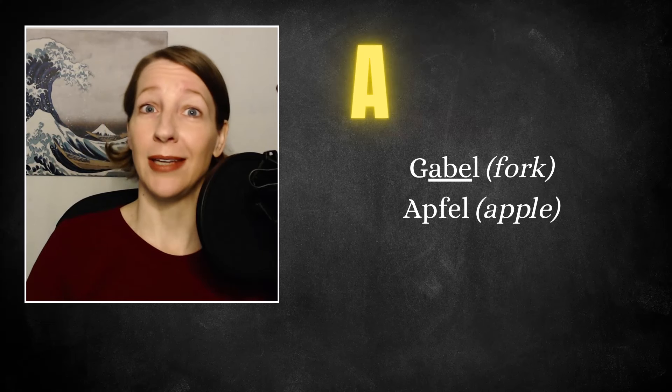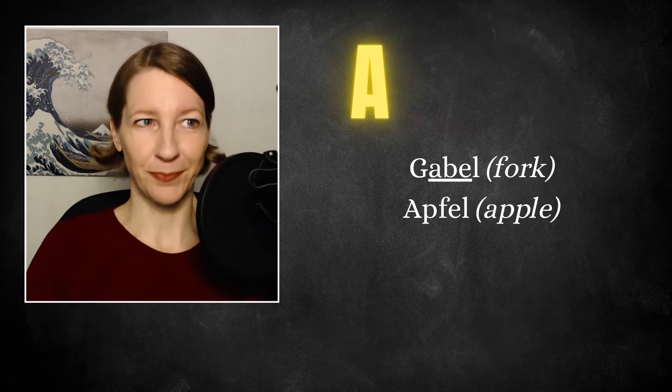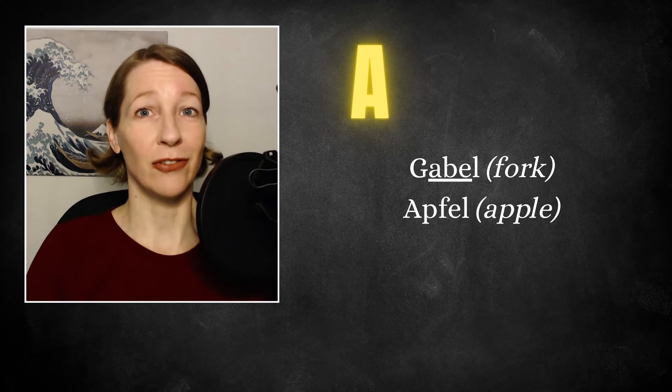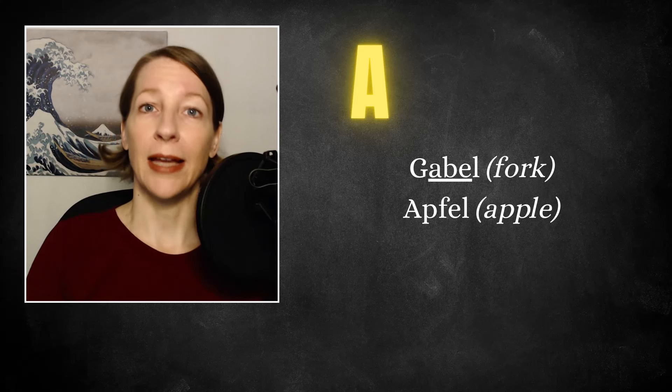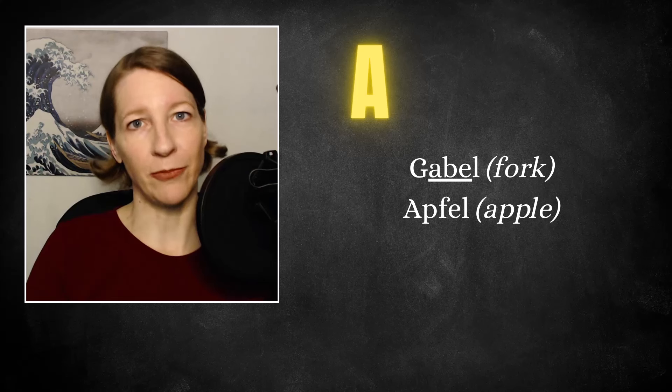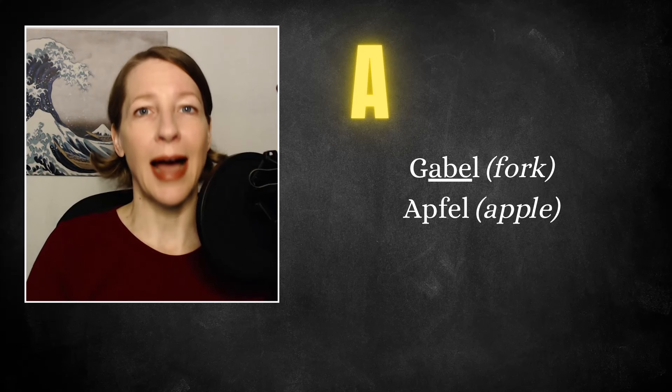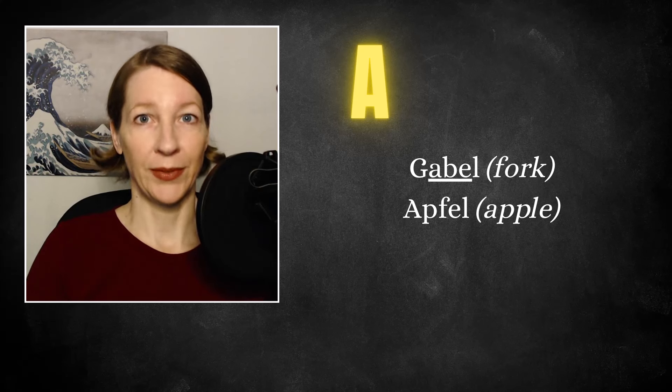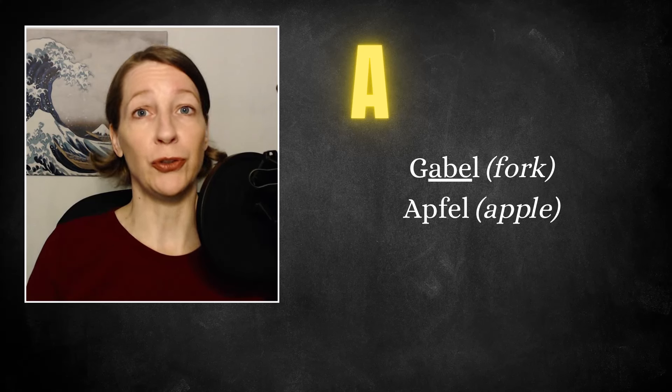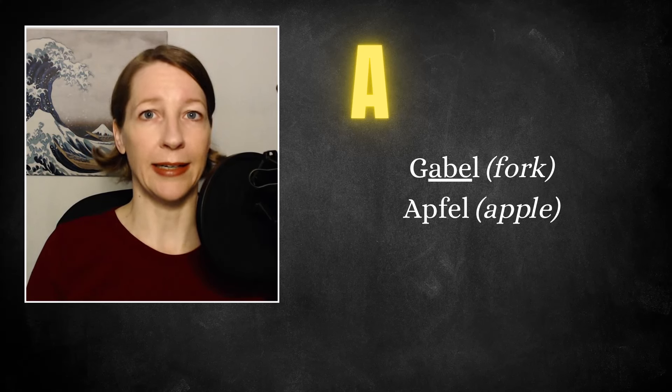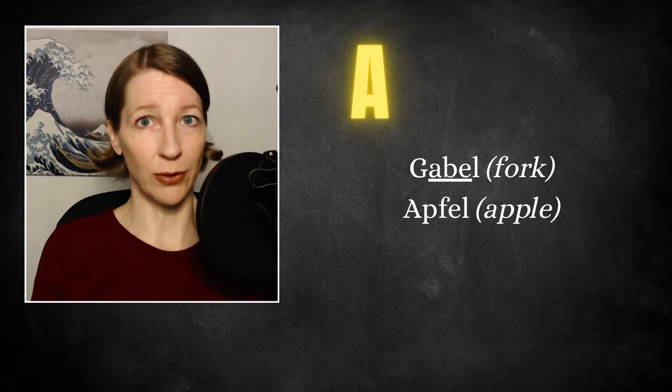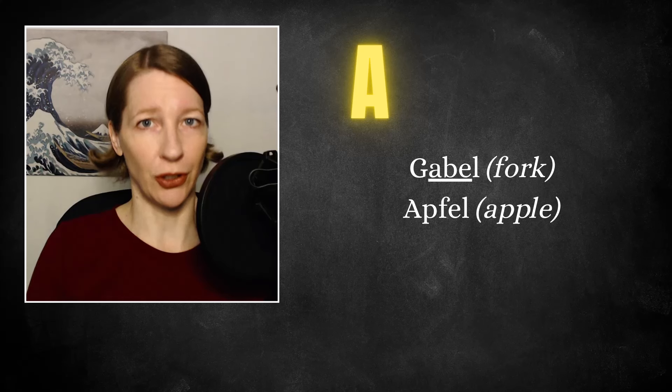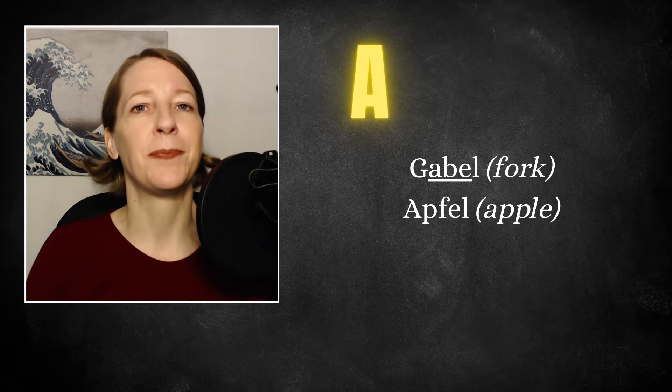So we'll start with the A. We have a long A as in Gabel, and a short one as in Apfel. Now the long vowels usually come up when it is followed by a consonant and then another vowel. That produces a long vowel.